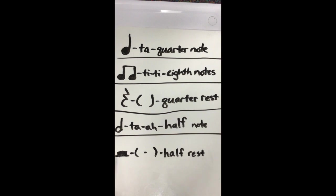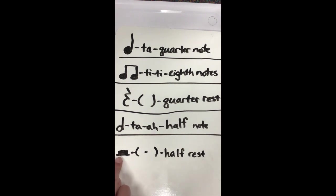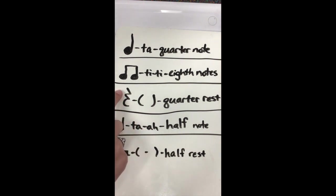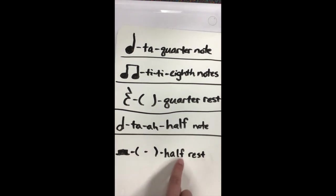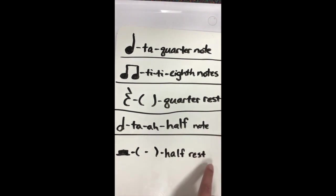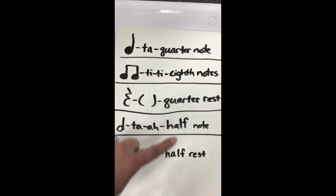Down here our last one — this is our half rest. It's kind of like our quarter rest where there is no note head, no circle. A way to remember: it looks like a hat that you would put on — hat goes with the half — and the rectangle going up from the line. That's two, so it gets two beats of silence. So the difference between a note and a rest: rest is silence, note is sound. Those are our five symbols.